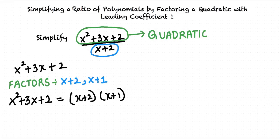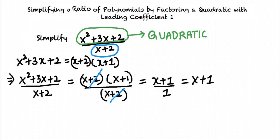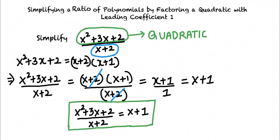x² plus 3x plus 2 equals x plus 2 times x plus 1. After substituting for the quadratic expression, we get x plus 2 times x plus 1 over x plus 2. After cancelling out the common term x plus 2, the ratio becomes x plus 1 over 1, which is x plus 1. Thus, the simplified form of the expression x² plus 3x plus 2 over x plus 2 is x plus 1.